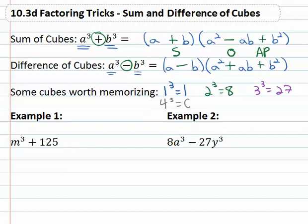4³ is 64, 5³ is 125, and 6³ is 216. If you have those memorized you're probably going to be okay for what we're doing.